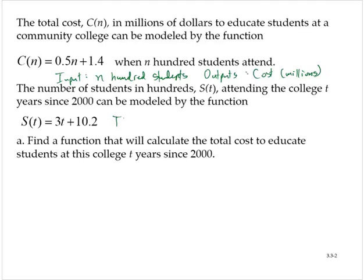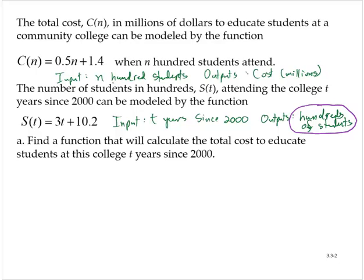S of t has the input as a time in years, t years since 2000, and it outputs hundreds of students at the college. Notice that the output for the S function is the input for the C function.